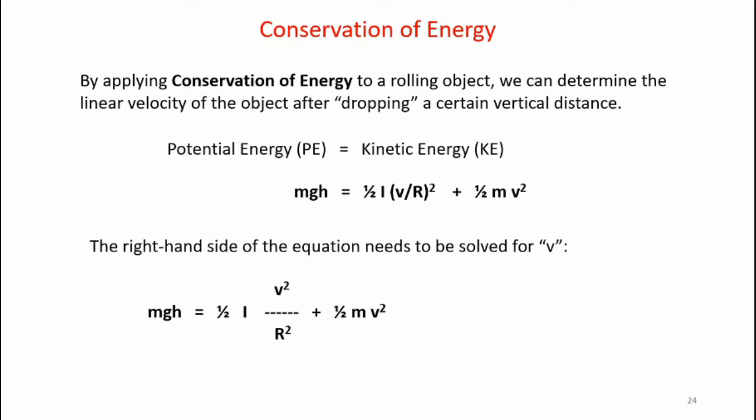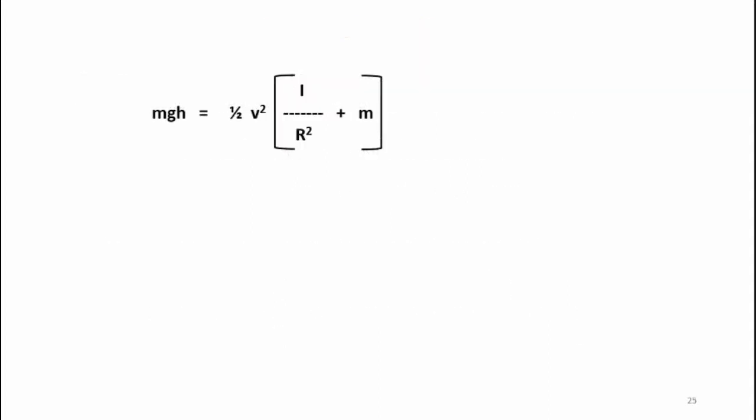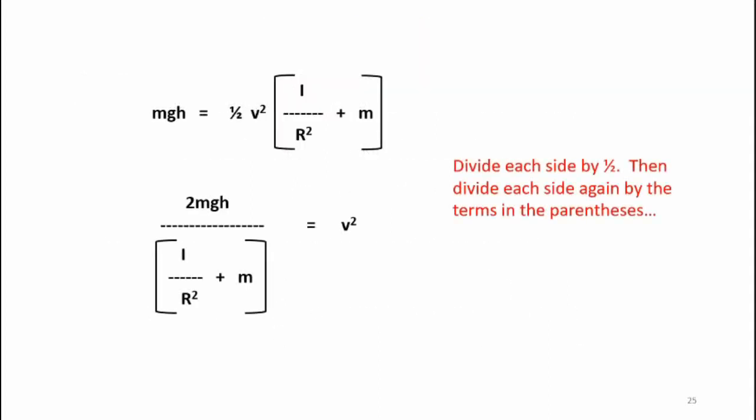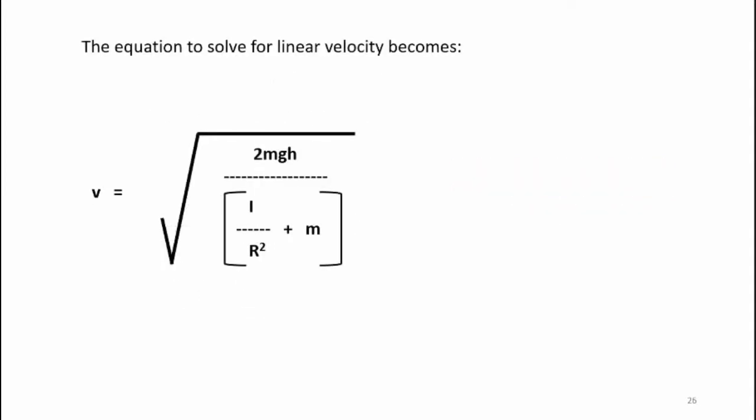The first step is to isolate any like variables on the right-hand side of the equation. In each of these terms, we have a one-half and a v squared. We can pull those out. We see that mgh equals one-half v squared times inertia divided by r squared plus m. Next, we can divide each side by one-half and then divide each side by i over r squared plus m. We see that v squared equals two mgh divided by i divided by r squared plus m. This velocity becomes the square root of two mgh divided by i over r squared plus m.